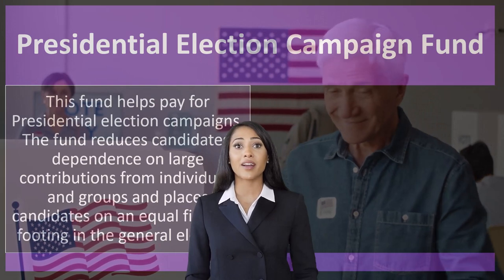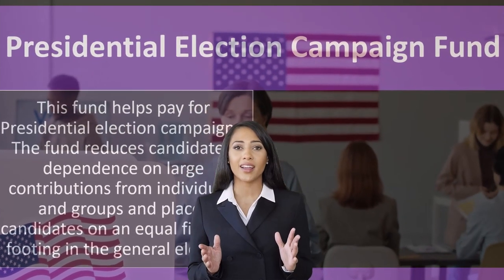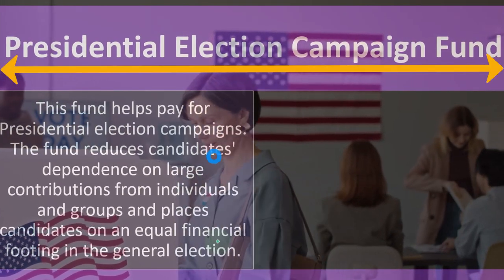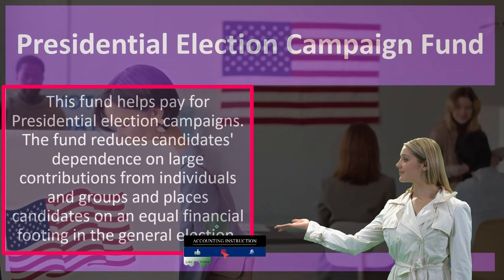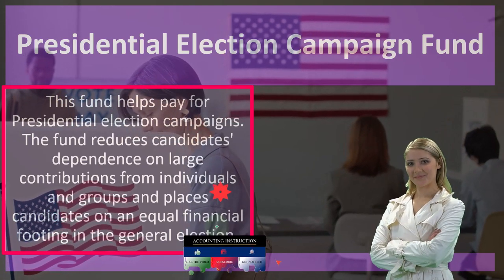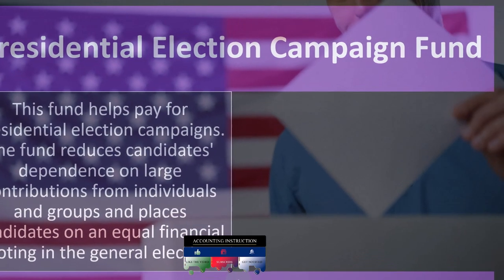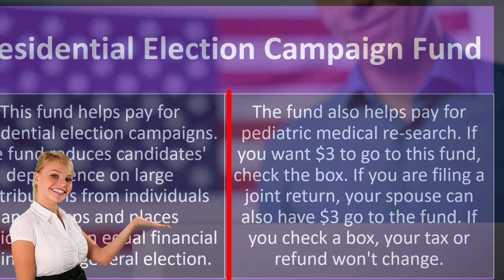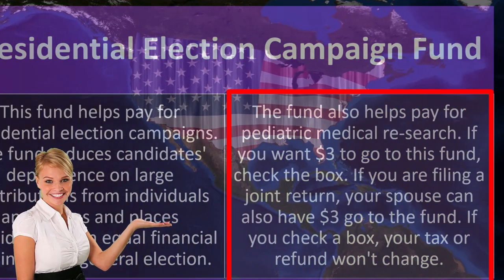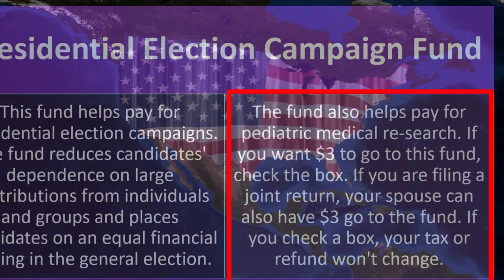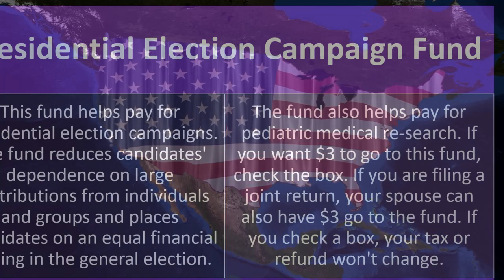It's typically a question in tax preparation that you would have to ask any new client: do you want to check this box off or not? This fund helps pay for presidential election campaigns. The fund reduces candidates' dependence on large contributions from individuals and groups, and places candidates on an equal financial footing in the general election. The fund also helps pay for pediatric medical research. If you want $3 to go to this fund, check the box. If you're filing a joint return, your spouse can also have $3 go to the fund. If you check a box, your tax or refund won't change.